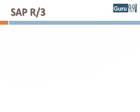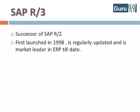SAP R3 is the successor of SAP R2. It was first launched in 1998, is regularly updated, and is the market leader in ERP till date.